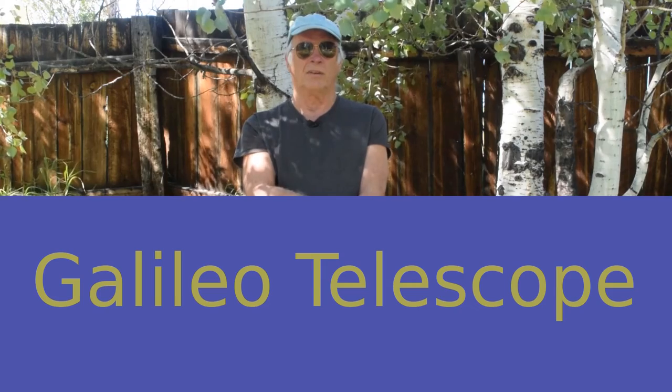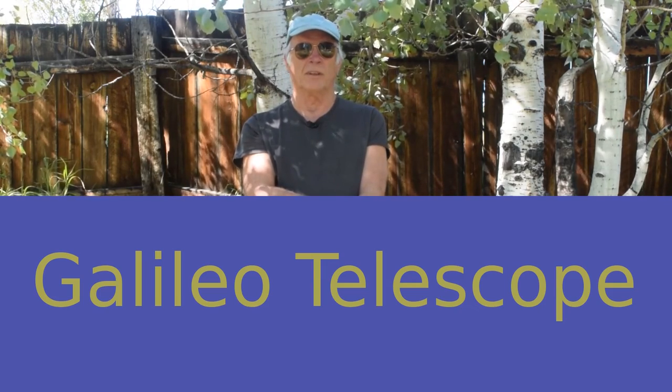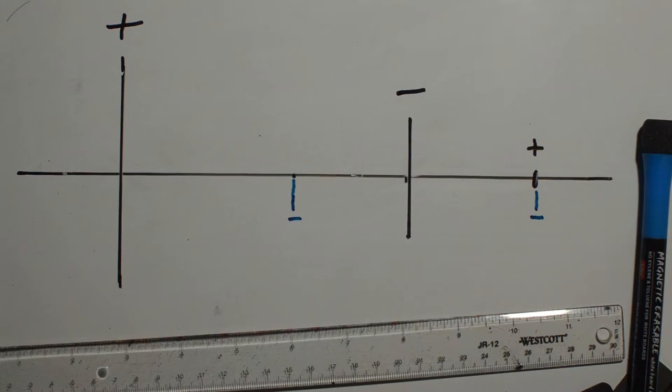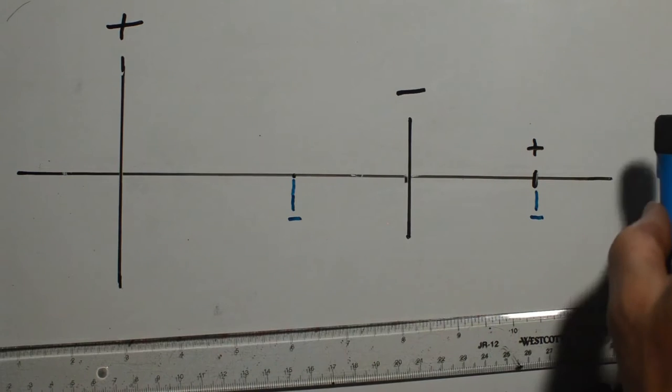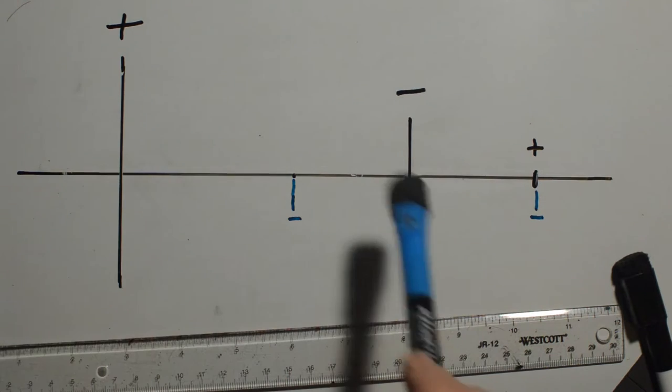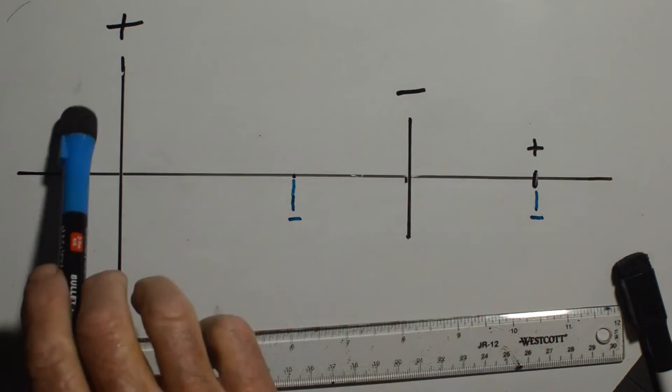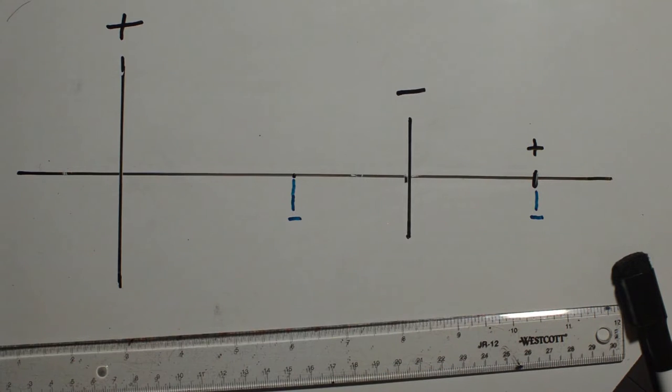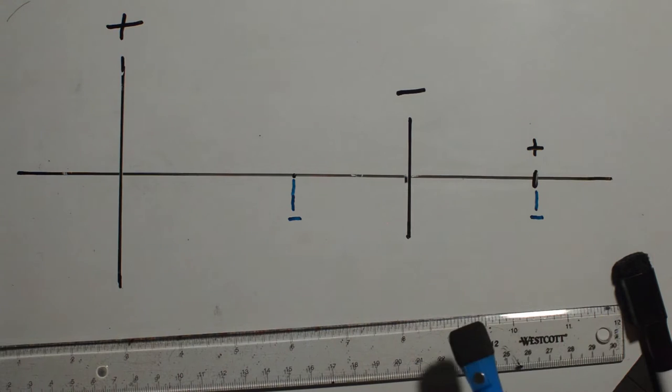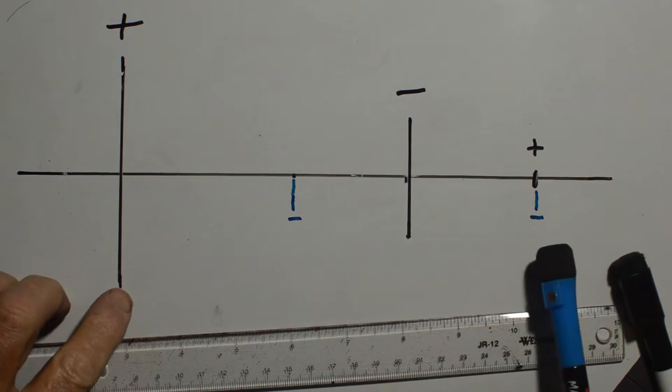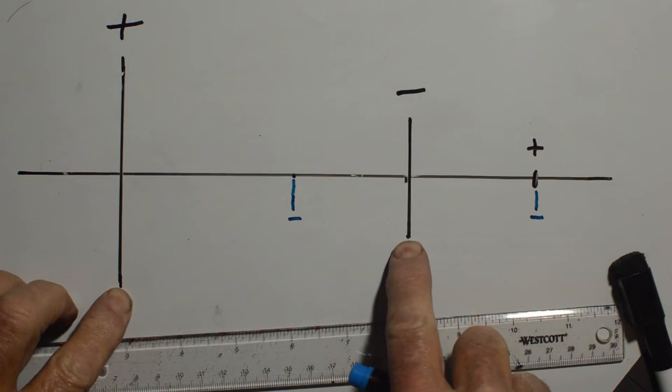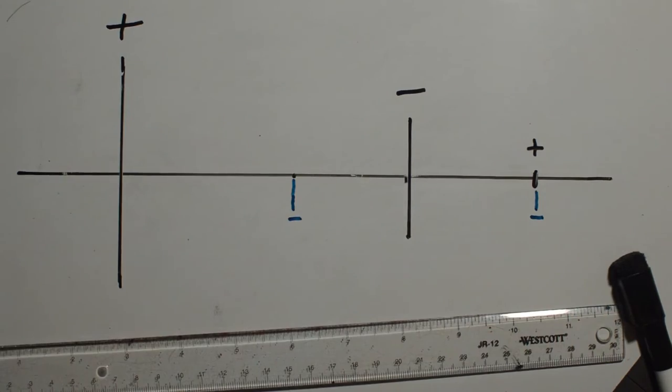Here is the Galilean telescope invented in the 17th century. Here we have a Galilean telescope. This is a positive lens and this is a negative lens, convex concave. This distance from here to here is the focal length of this lens, and also the focal length of this lens. So here's how it works.